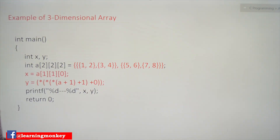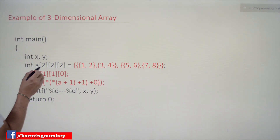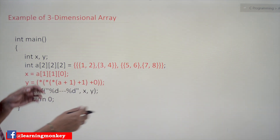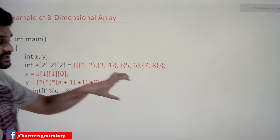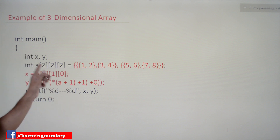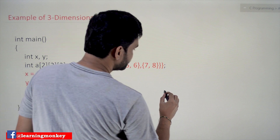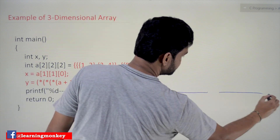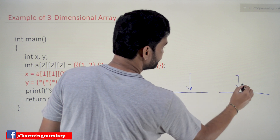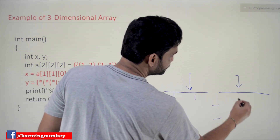So far in our previous class we discussed the three-dimensional array. Here the array is two columns of two-dimensional arrays, and each two-dimensional array is going to have two rows and two columns.